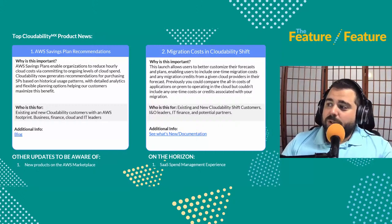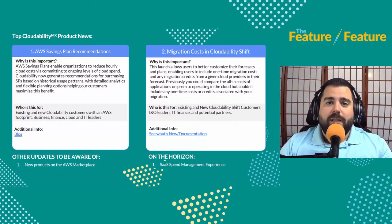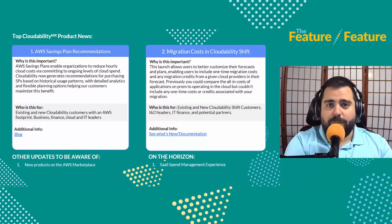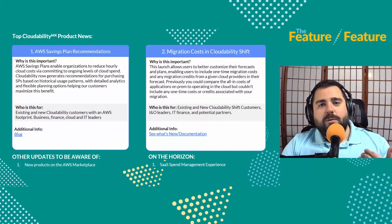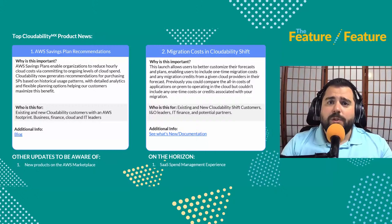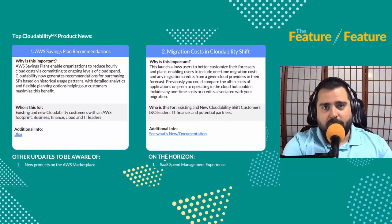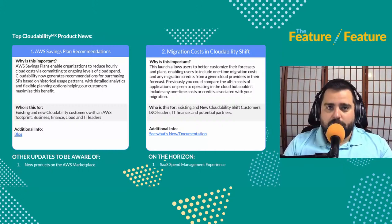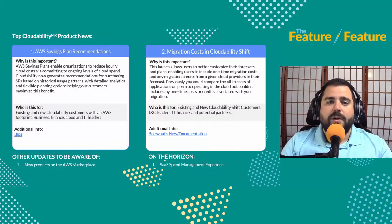We're also surfacing migration costs in Cloudability Shift, our migration financial planning solution. Along with doing financial forecasts for moving from on-premises infrastructure to the cloud, we now allow you to include one-time costs and costs for specific durations during the migration — things like labor, services, additional fees, or applications used short-term. Previously this was rolled up in the total, but now it's surfaced in charts so you get a clear picture of those bubble costs.